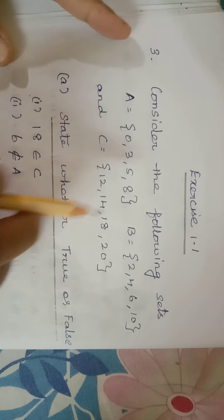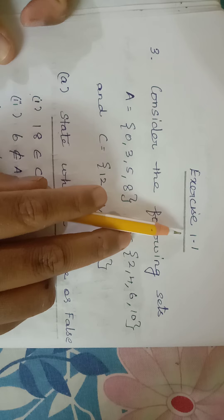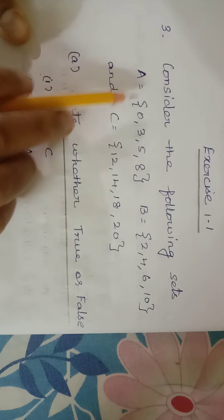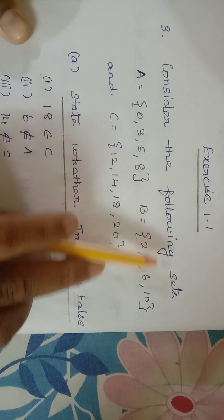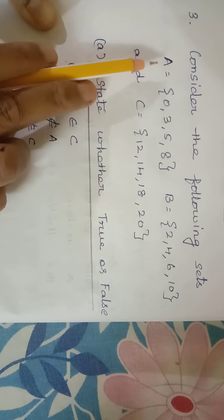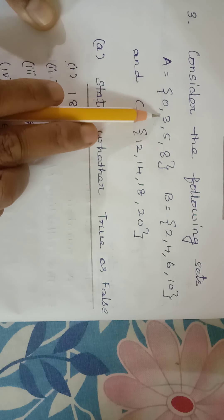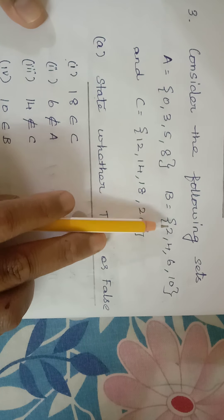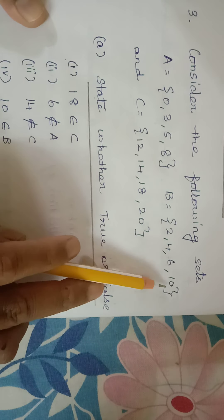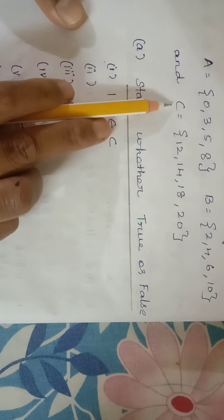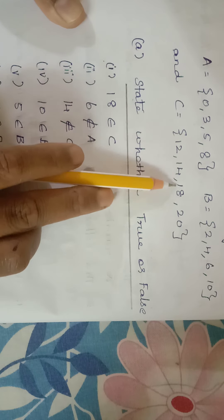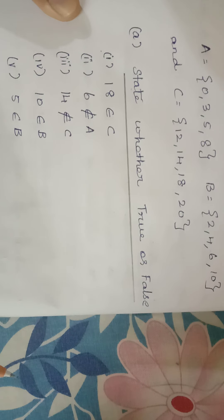Now Exercise 1.1, third sum. Consider the following sets: A = {0, 3, 5, 8}, B = {2, 4, 6, 10}, and C = {12, 14, 18, 20}. We have to state whether true or false.